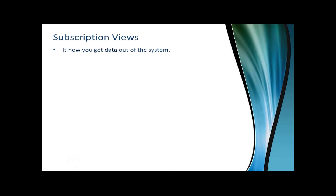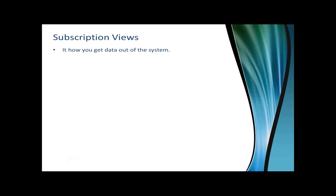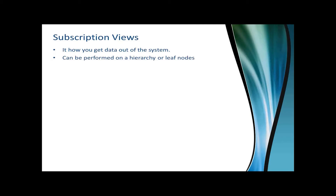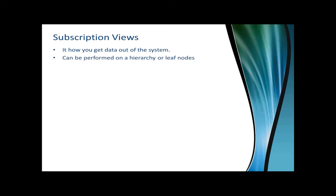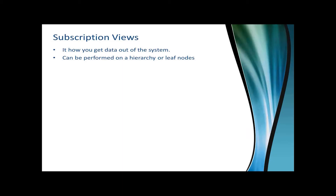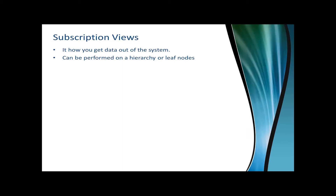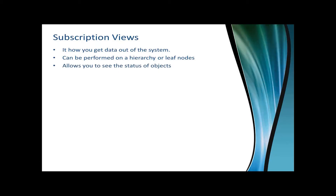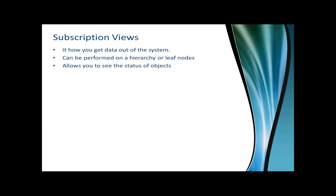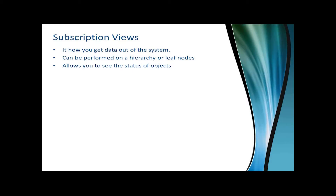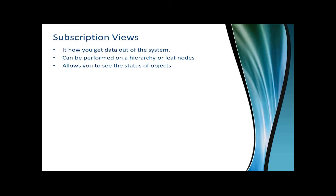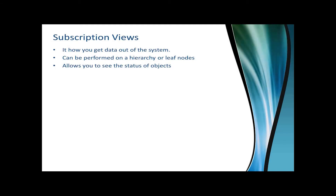Subscription views are how you get data out of the system. You create a subscription view to expose data to your applications or consumers. These can be performed on hierarchies or leaf nodes. It allows you to see the status of objects, which is important for data warehousing — you could create a view and check status to determine if you need to update an item, pulling only validated items to update your data warehouse.